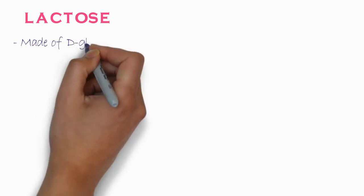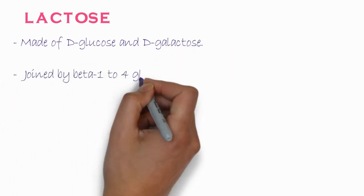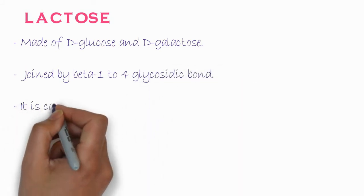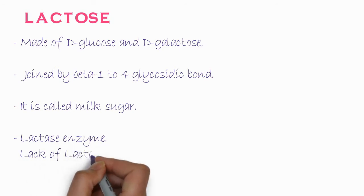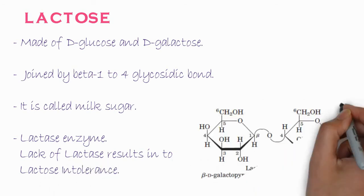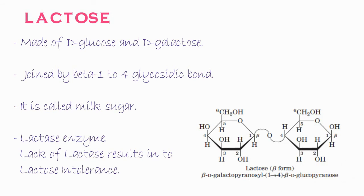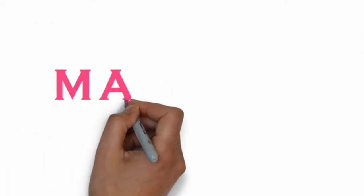The next example is lactose. It is made of D-glucose and D-galactose, with the two monosaccharide units attached by a beta-1,4 glycosidic bond. It is also called milk sugar. An enzyme known as lactase is responsible for hydrolyzing lactose; humans who lack lactase experience a condition known as lactose intolerance. The chemical structure shows beta-D-galactose attached via a glycosidic bond to beta-D-glucopyranose. Notably, 13 grams of lactose is present in one cup of milk.